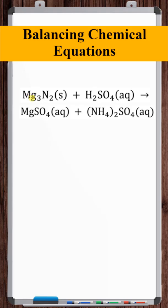So for example, magnesium only occurs twice, once on each side. So let's balance that. We've got three on the left, so put three on the right.